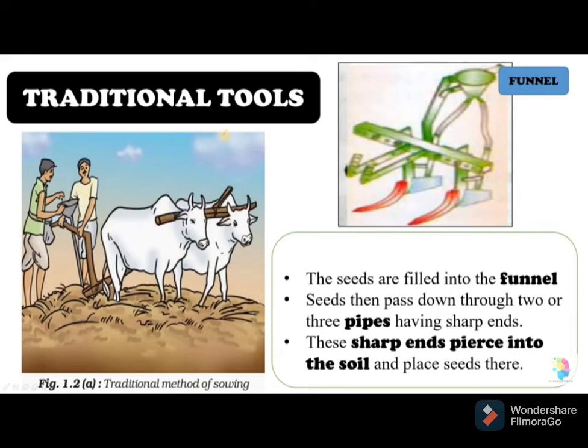The traditional tool used for sowing looks like a funnel. As you can see in the diagram, seeds are filled into the funnel at the top and passed down through two or three pipes attached to it. These pipes have sharp ends that pierce into the soil, placing the seeds in the ground.